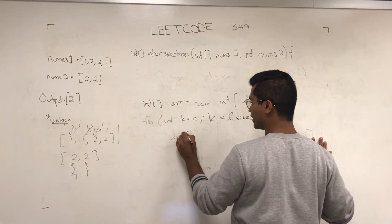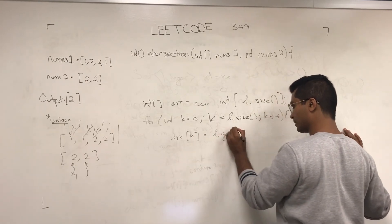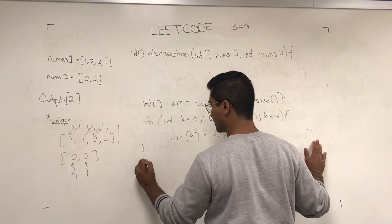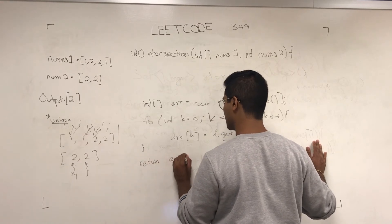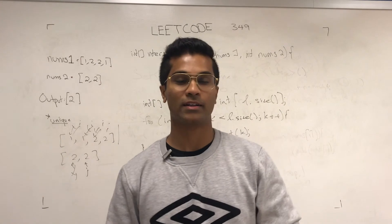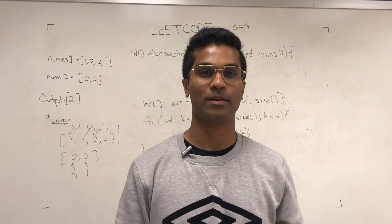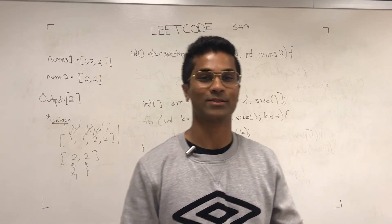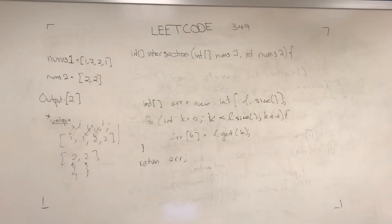We're going to put in l.get(k) and we're going to return arr. So that's how you solve LeetCode 349, intersection of two arrays. If you liked this video, please subscribe, share it with your friends, and please like. Thank you.